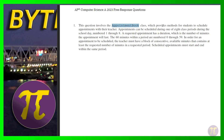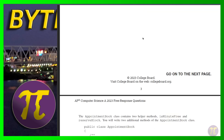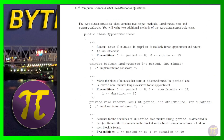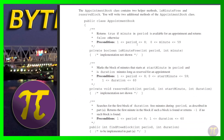The question involves the appointment book class which provides methods for students to schedule appointments with their teacher. The teacher has class periods one through eight, and each appointment has a duration of 60 minutes, zero through 59. Essentially, a teacher's day is made up of eight periods and each period is made up of 60 minutes. We don't have to worry about how appointment book manages that internally — they give us two functions we can use: `isMinuteFree` and `reserveBlock`.